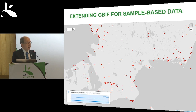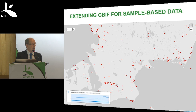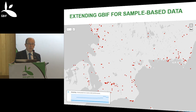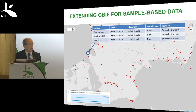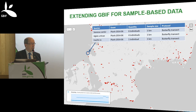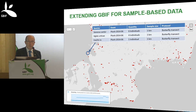If you look at a GBIF map today, this is actually a fairly random view of a group of species from a part of Sweden. What you see are points on a map, but if you dig deeper into the data, you may find that some of these points represent multiple species recorded on a particular day and in a particular place. Very often the source data will include more information — as here, for these three butterflies, there was a single planned recording event: a butterfly transect covering one kilometer, and the number of individuals of each species recorded.